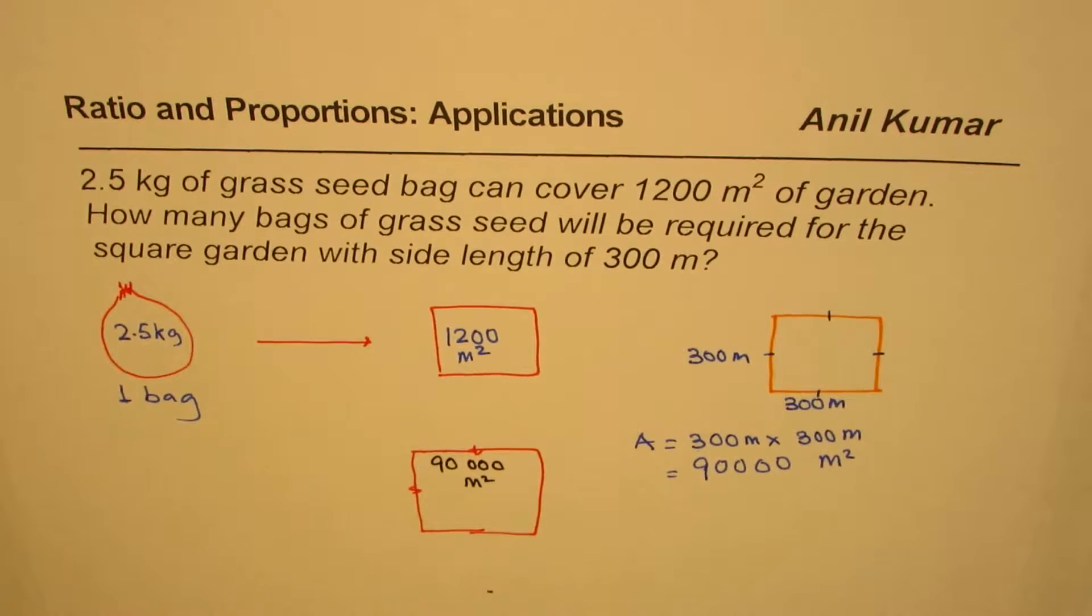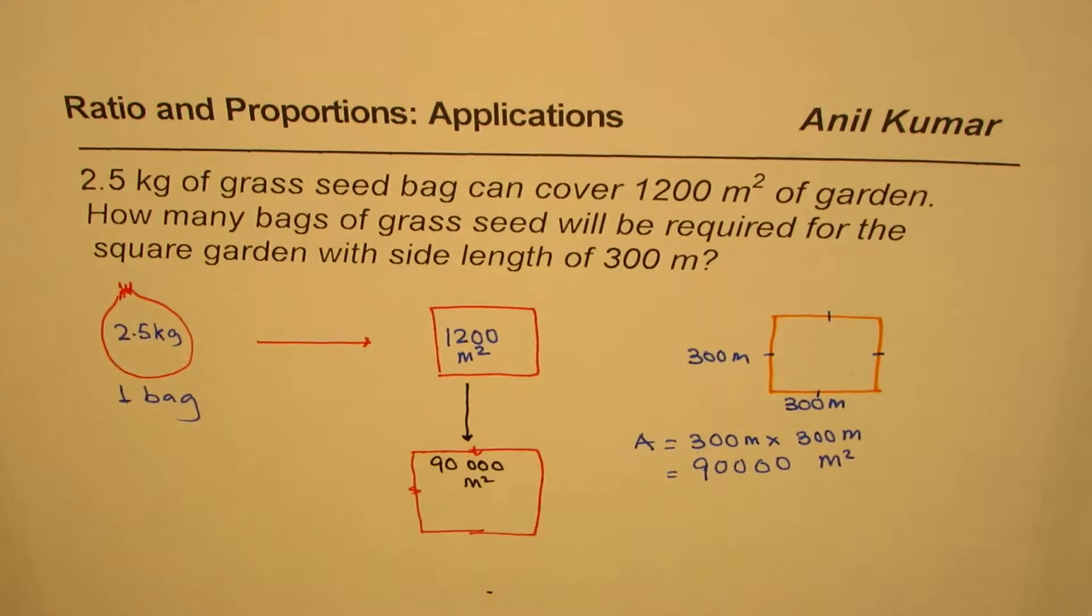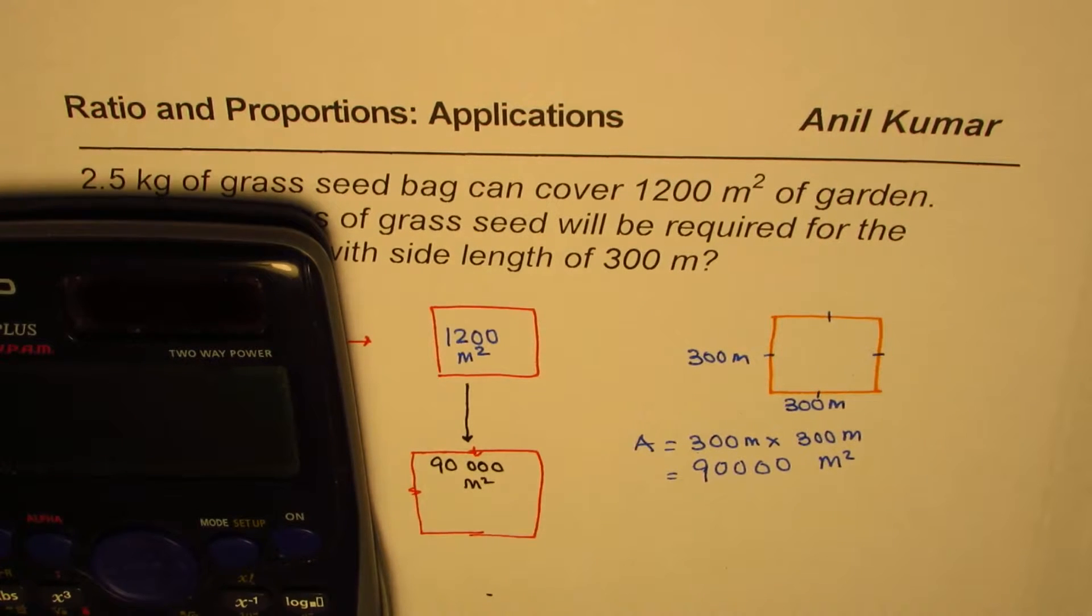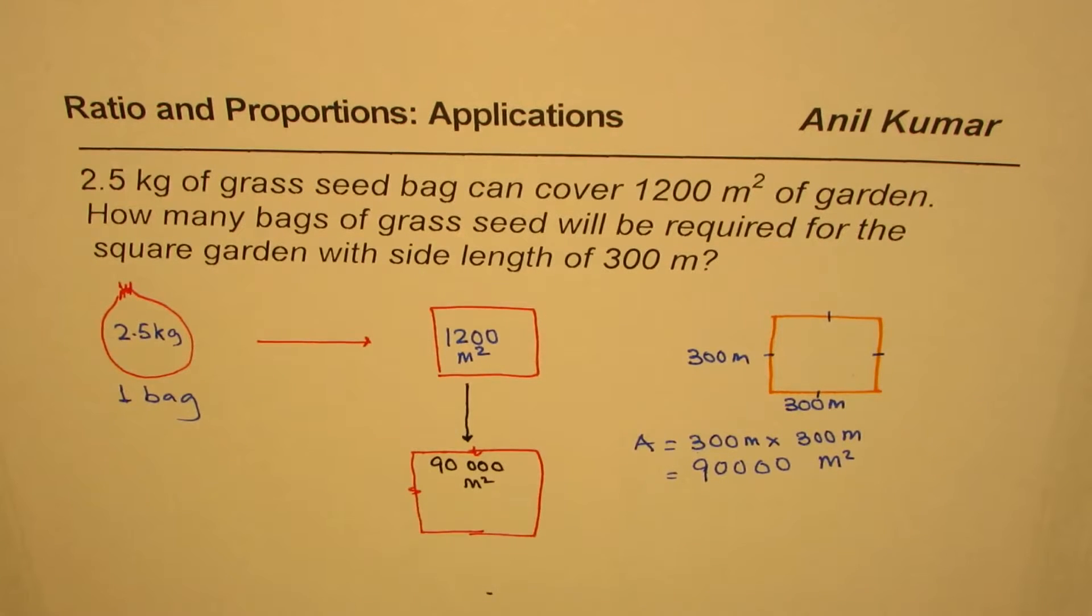Now how many bags for this? If you go from 1200 to 90,000, how many times does it increase? Let's work that out. So we'll divide 90,000 by 1200, we get a number which is 75. So we have to multiply this by 75.